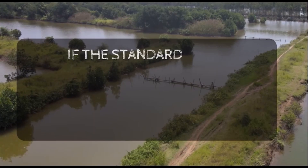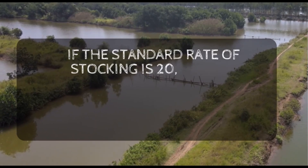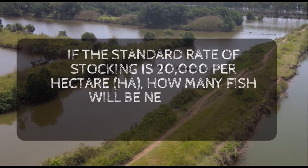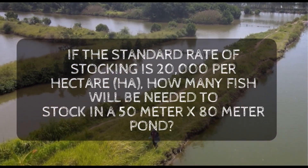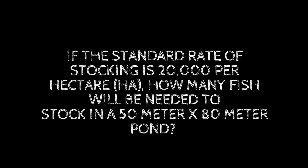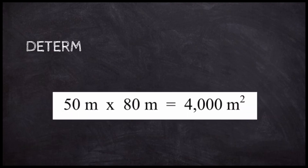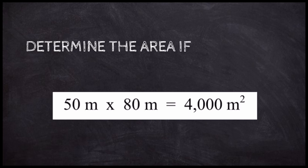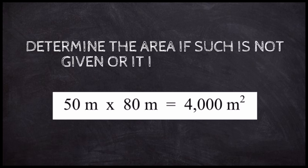For example, if the standard rate of stocking is 20,000 per hectare, how many fish will be needed to stock in a 50 meter by 80 meter pond? First, let's determine the area if it is not given or unknown. 50 meters by 80 meters is equal to 4,000 square meters.